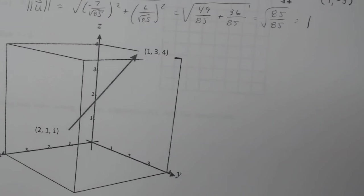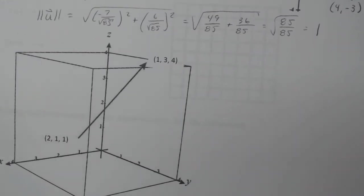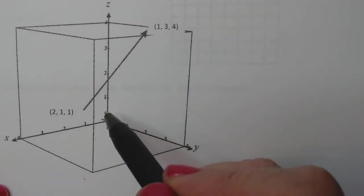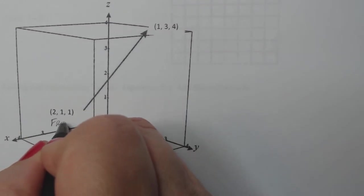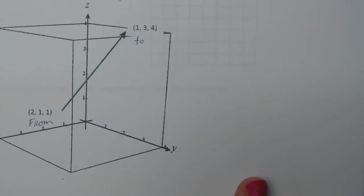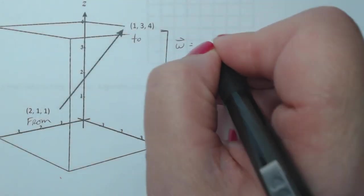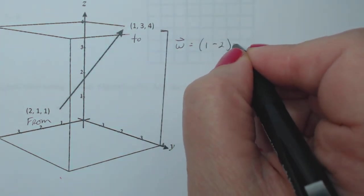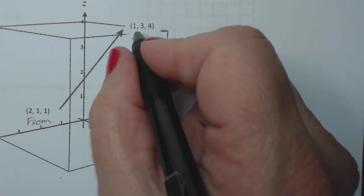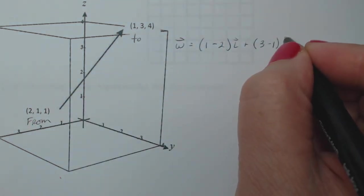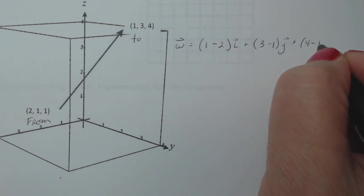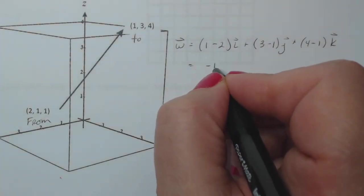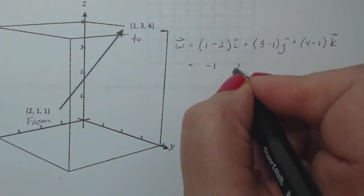Now we're going to do the same thing down here. This is in three space. I have the from and the to already labeled here. So this is from and to. So let's talk about the components of W. So I'm going to take the difference in the y's. So (1 - 2)i + (3 - 1)j + (4 - 1)k. Do the math. I get -1, 2, and 3.